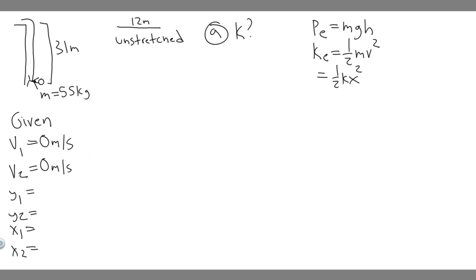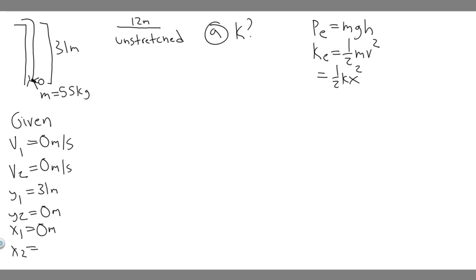For height: I'm going to call the bottom zero and the top 31, so Y1 equals 31 meters and Y2 equals zero meters. For the stretch distance X: at the beginning the cord isn't stretched at all, so X1 equals zero meters. At the very end, they travel 31 meters total but the cord is 12 meters unstretched, so it stretches 19 meters — X2 equals 19 meters.